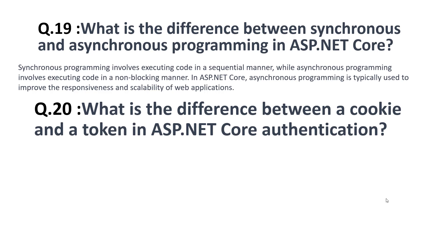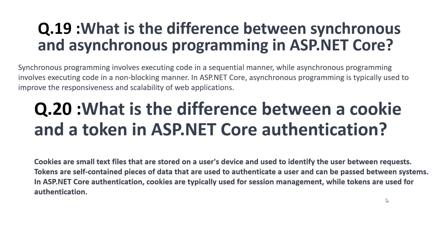The twentieth and final question is: what is the difference between a cookie and a token in ASP.NET Core authentication? Cookies are small text files stored on a user's device and used to identify users between requests. Tokens are self-contained pieces of data used to authenticate a user and can be passed between systems. In ASP.NET Core, cookies are typically used for session management while tokens are used for authentication.